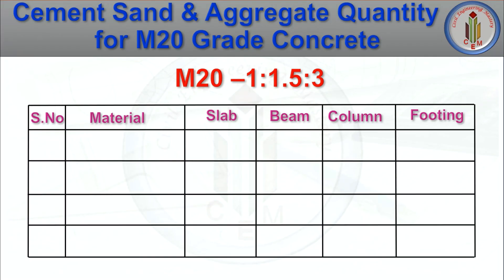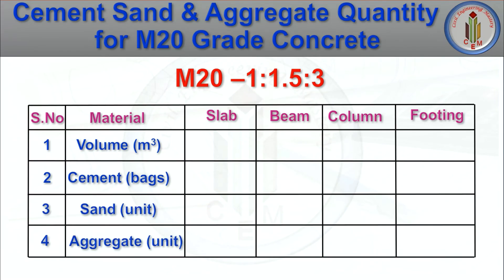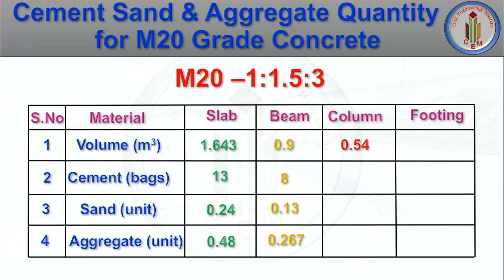Now let us look at the overall quantity of materials. For slab (wet volume 1.643 m³): 13 bags of cement, 0.24 unit sand, 0.48 unit aggregate. For beam (0.9 m³): 8 bags cement, 0.13 unit sand, 0.27 unit aggregate. For column (0.54 m³): 5 bags cement, 0.08 unit sand, 0.16 unit aggregate. For footing (0.675 m³): 6 bags cement, 0.1 unit sand, 0.2 unit aggregate.